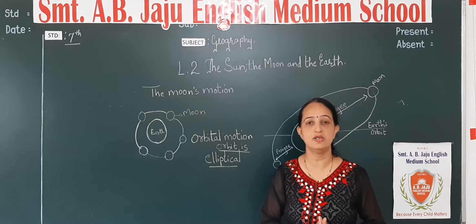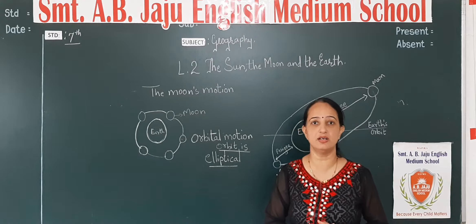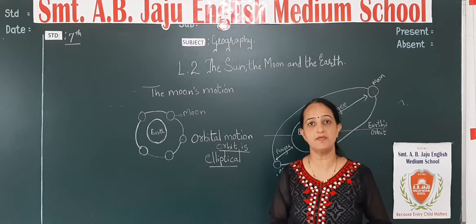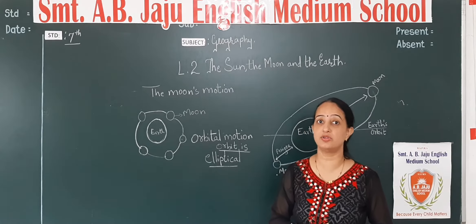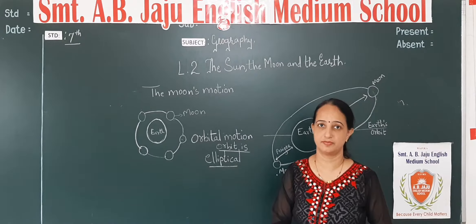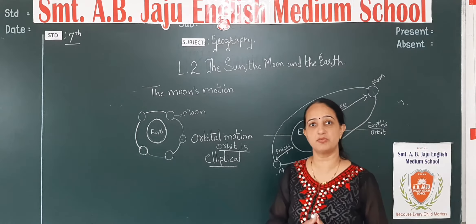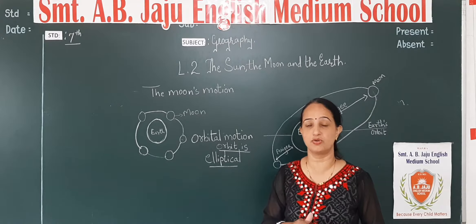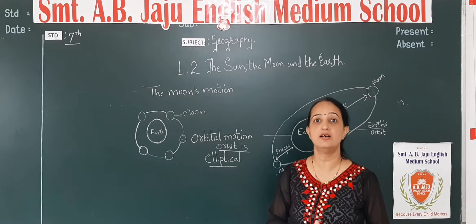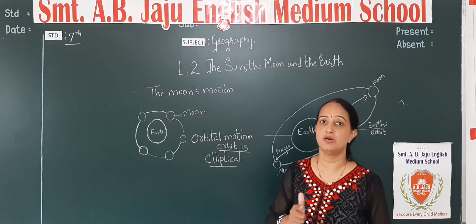As you all know, the earth revolves around the sun. In the same way, the moon revolves around the earth. So the earth does revolution around the sun, and in the same way the moon also revolves.